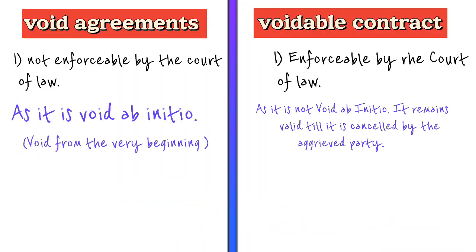Void agreements are those agreements which are not enforceable by the court of law as they are void ab initio. Void ab initio means void from the very beginning — the very moment you enter into it, it will be considered as void and will not be recognized by the court of law. For example, if you make an agreement with a minor or a person of unsound mind, such agreement will be considered as a void agreement.